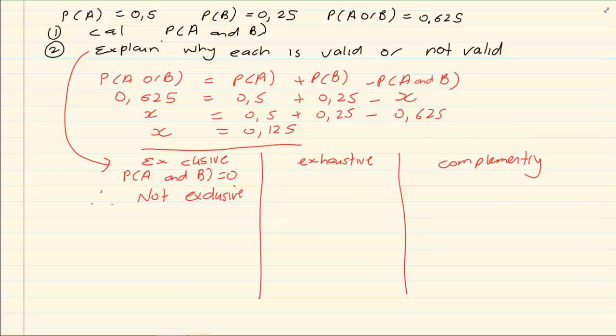Is it exhaustive? For it to be exhaustive, P of A or B must equal to 1. But in this case, P of A or B is equal to 0.625. Therefore it is not exhaustive.